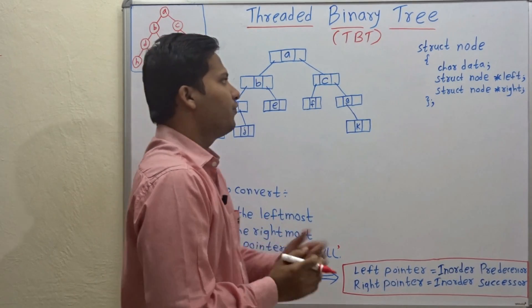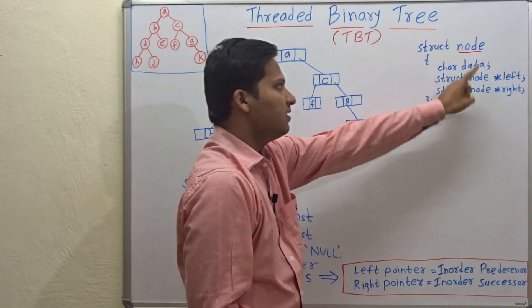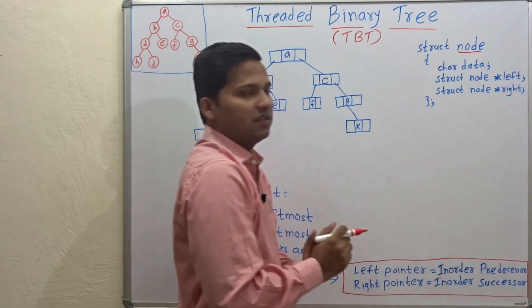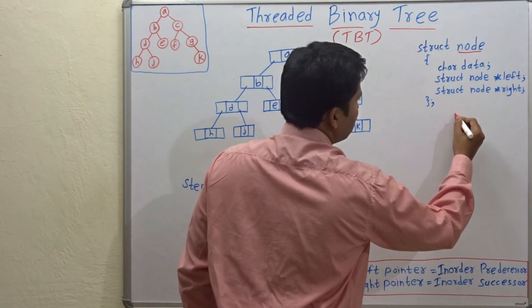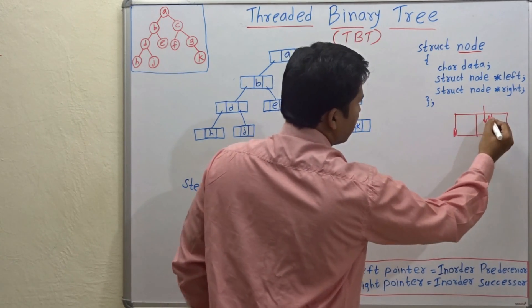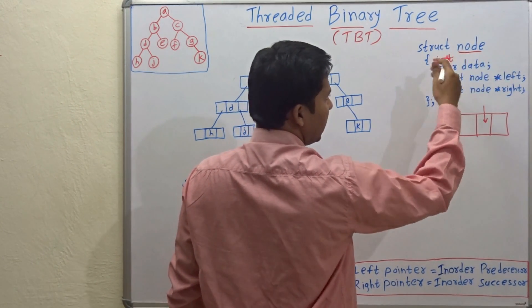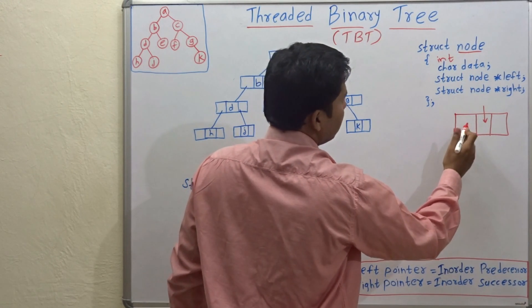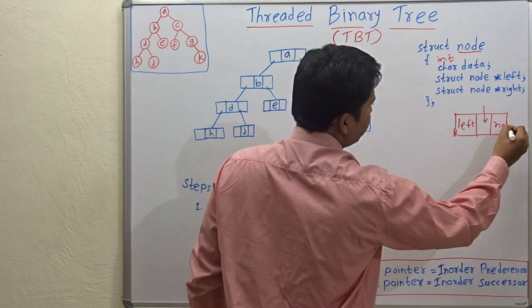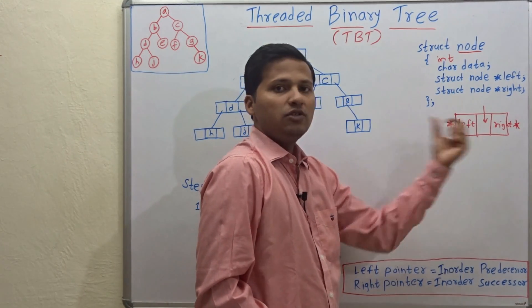As you know, for a binary tree node the structure has character data, a left pointer, and a right pointer. The data can be of any data type - integer or any other type. These two are pointers. So this is the structure of a node.